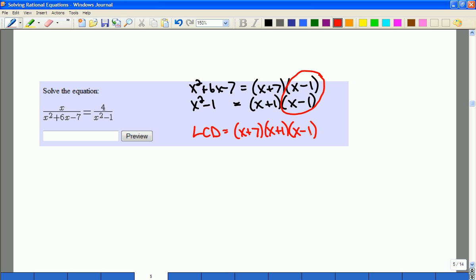So that's what I'm going to multiply through by here. I would have x times x plus 7, x plus 1, and x minus 1.